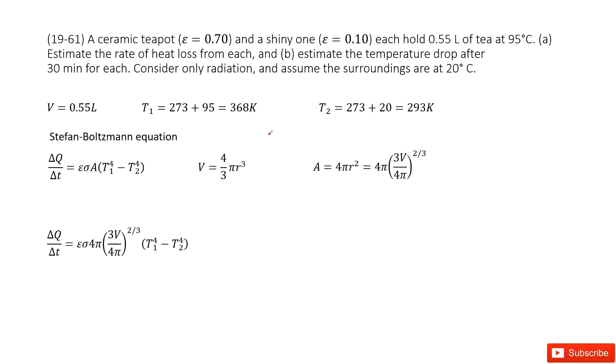We have two teapots - one ceramic, one shiny - each with a given emissivity. The volume is the same for both. The temperature is given, so we convert to Kelvin. The surrounding temperature is 27 degrees, which we write as T₂, also in Kelvin.